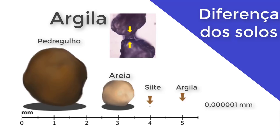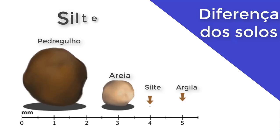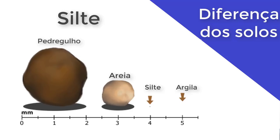O próximo solo é o silt. O silt podemos identificar como um elo perdido entre a areia e a argila — ele tem ora comportamento de argila, ora comportamento de areia. Como ele é mais granular do que a argila, ele não tem a ligação atômica e, portanto, não tem o estado plástico como a argila. Ele passa por quase todos os estados, a menos que tenha uma concentração de argila que proporcione certa coesão entre as partículas.